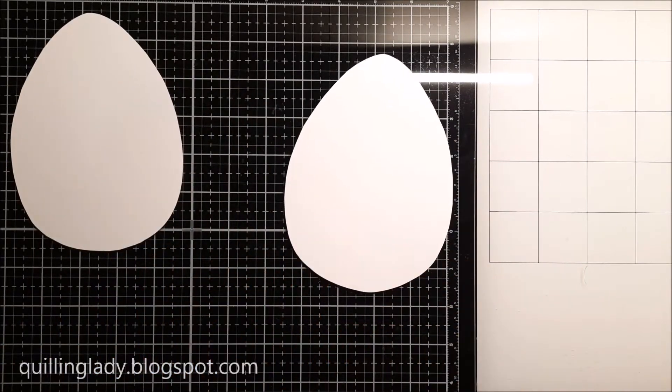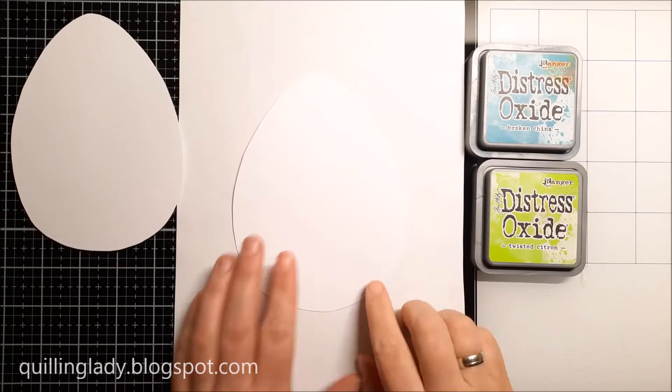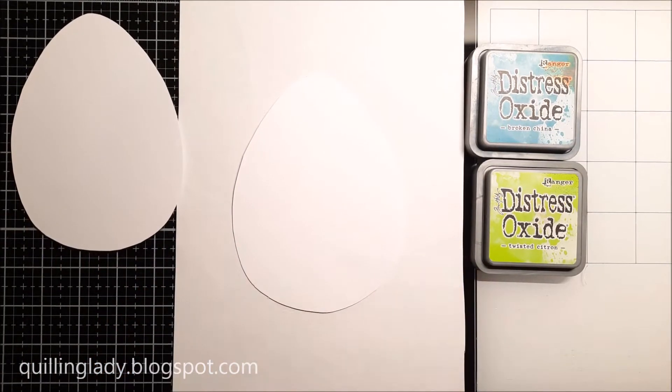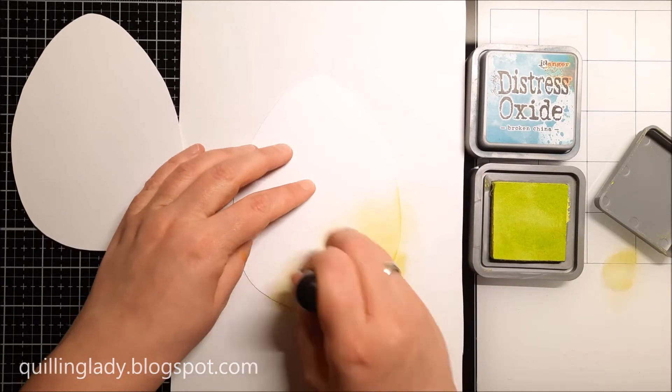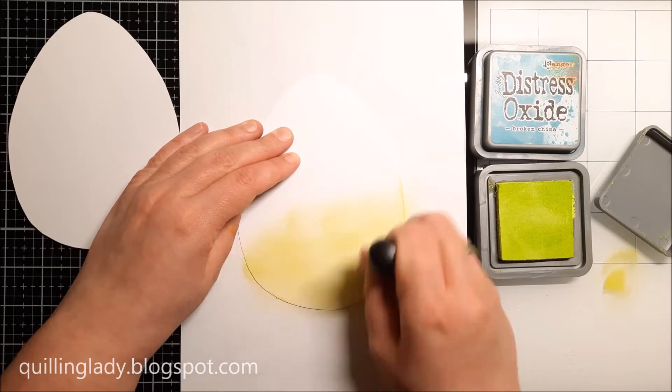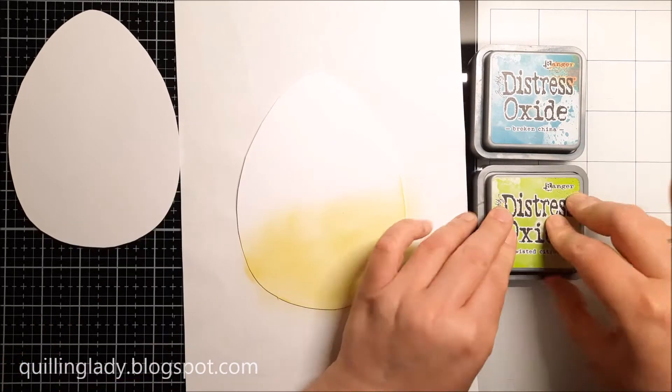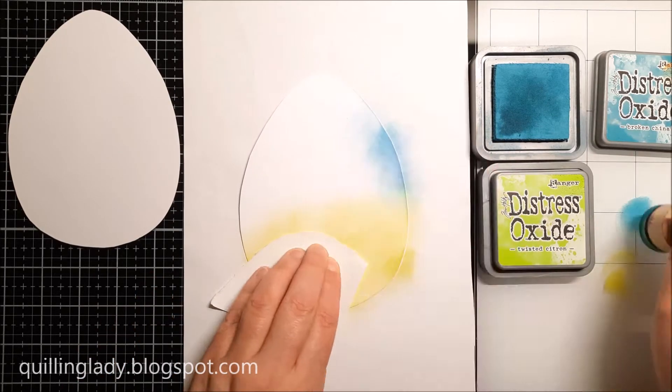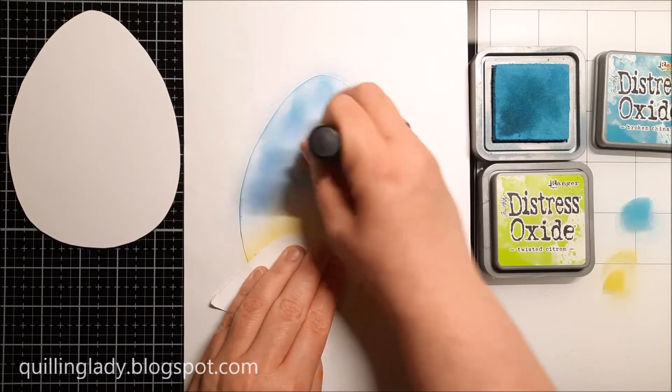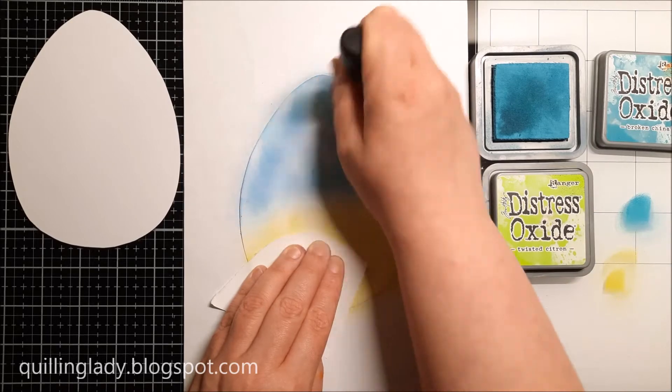To do it, I'm going to use Distress Oxide inks in Broken China and Twisted Citron. I really like ink blending technique because this way you can actually create so many beautiful backgrounds on your projects. Do you do that, or do you prefer to use colored paper?